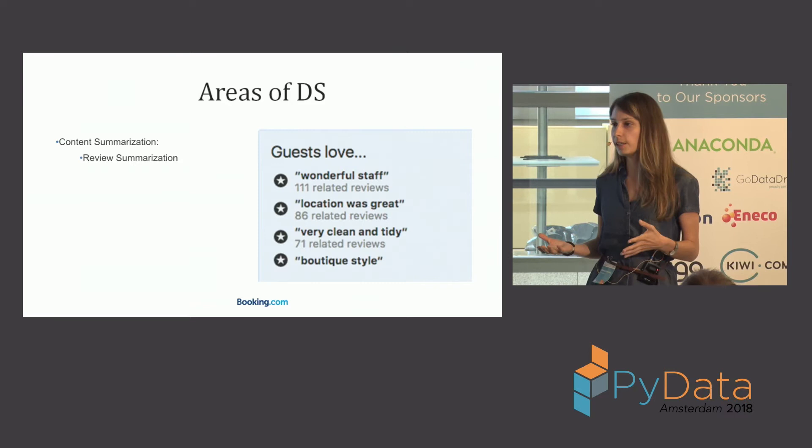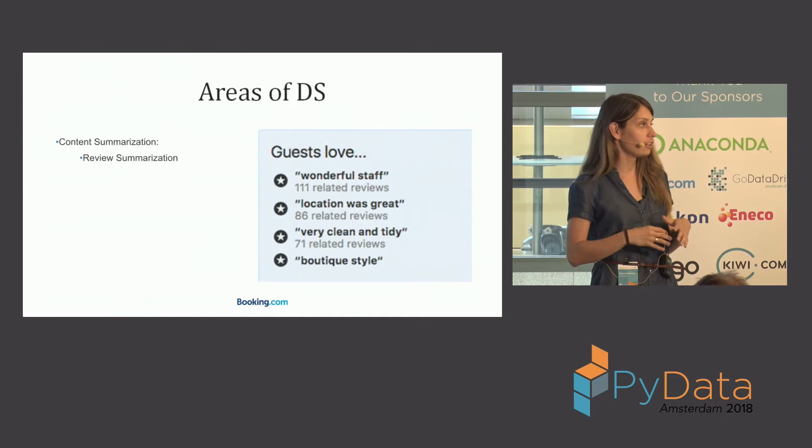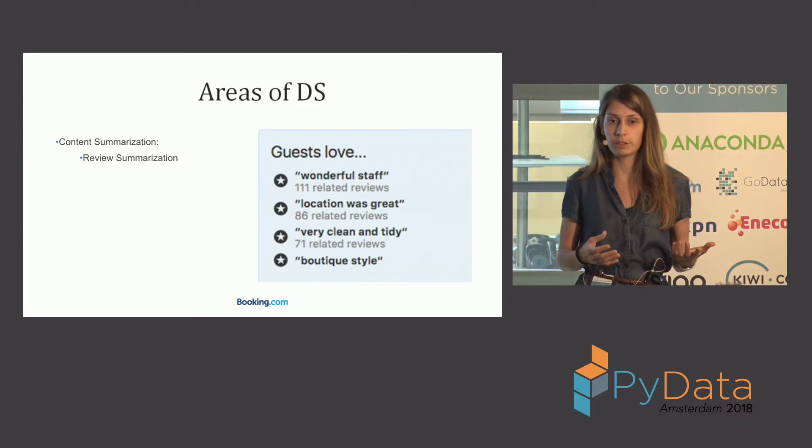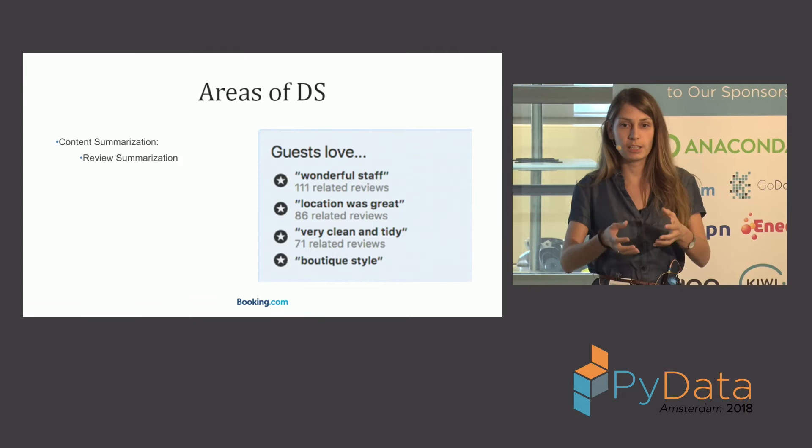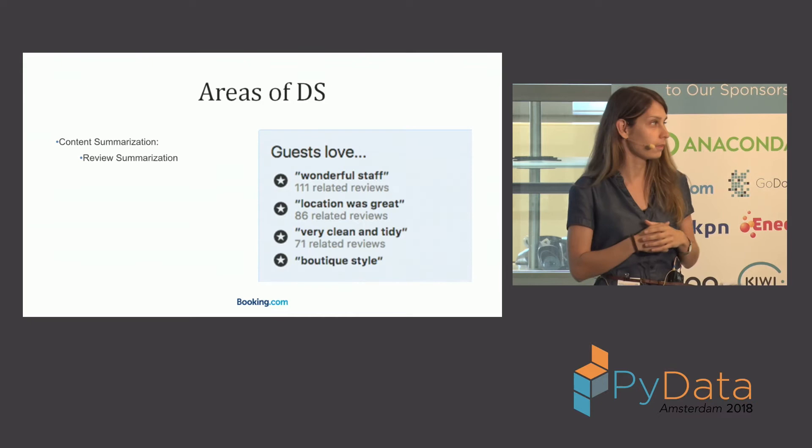It turns out there are enormous amounts of areas where you can do machine learning modeling to help the user even if you don't know much about them. One example is content summarization. When you come to our website there's an enormous amount of information that can be overwhelming, so we can summarize it so you don't have to go through all of it.